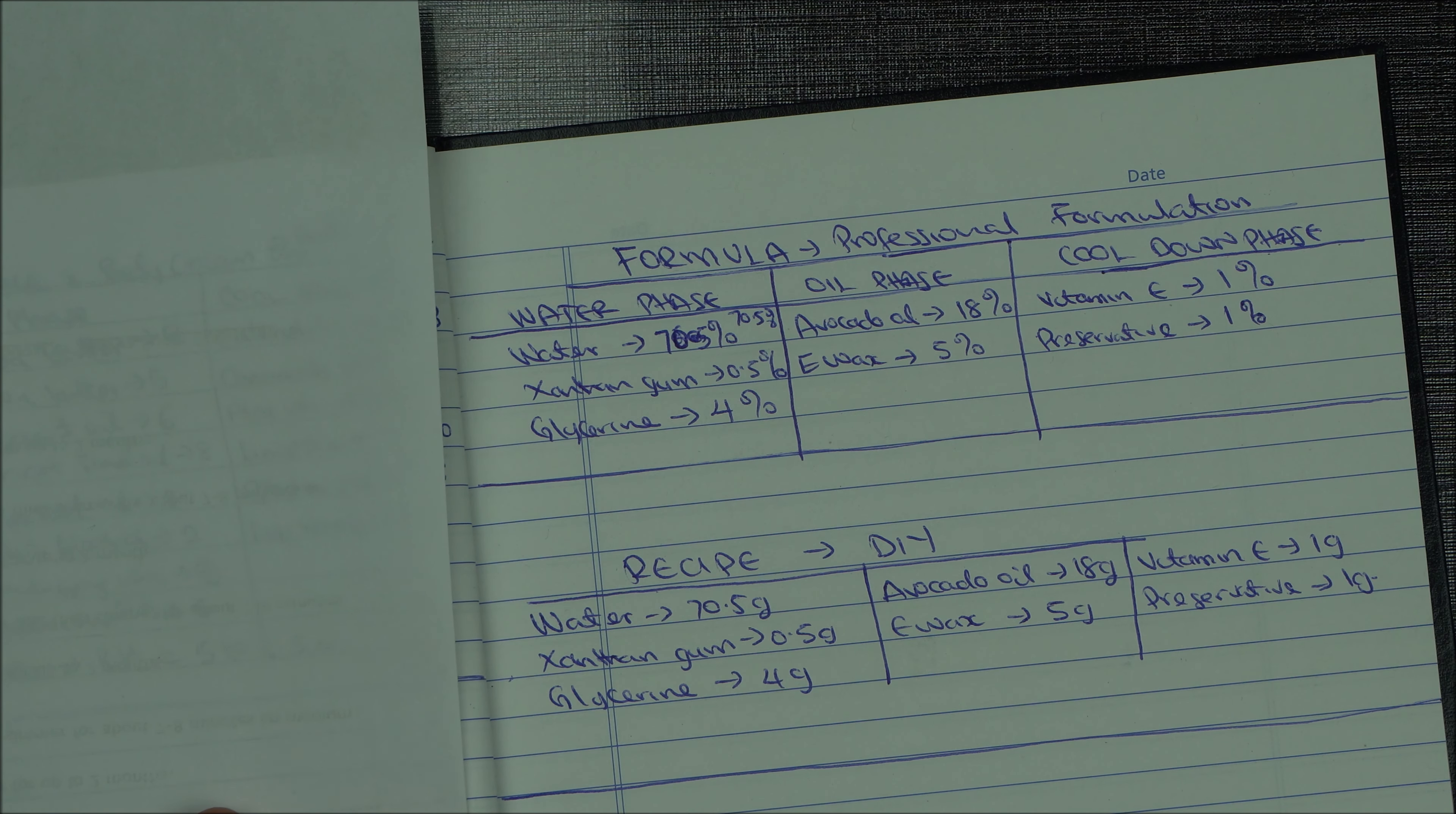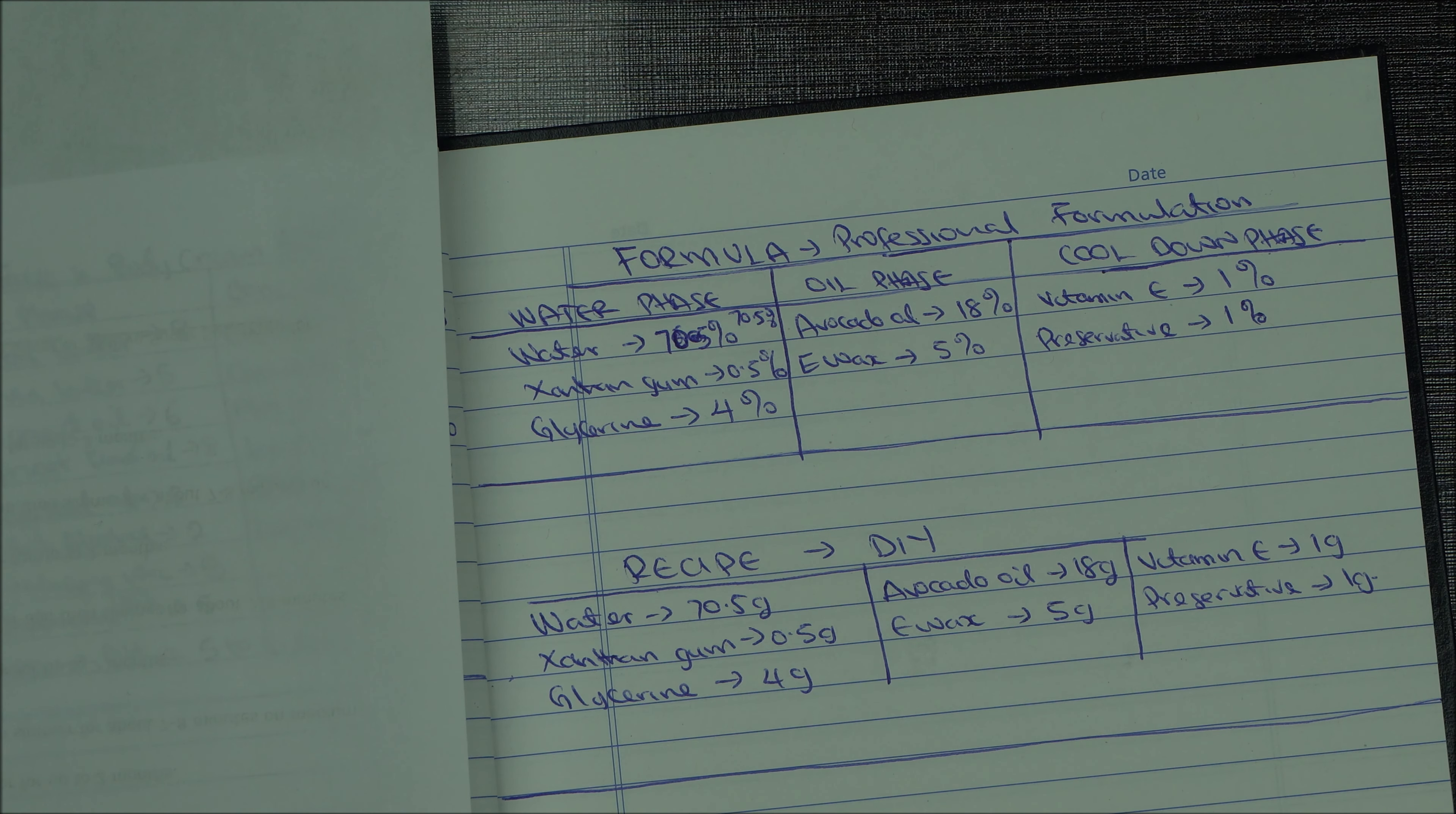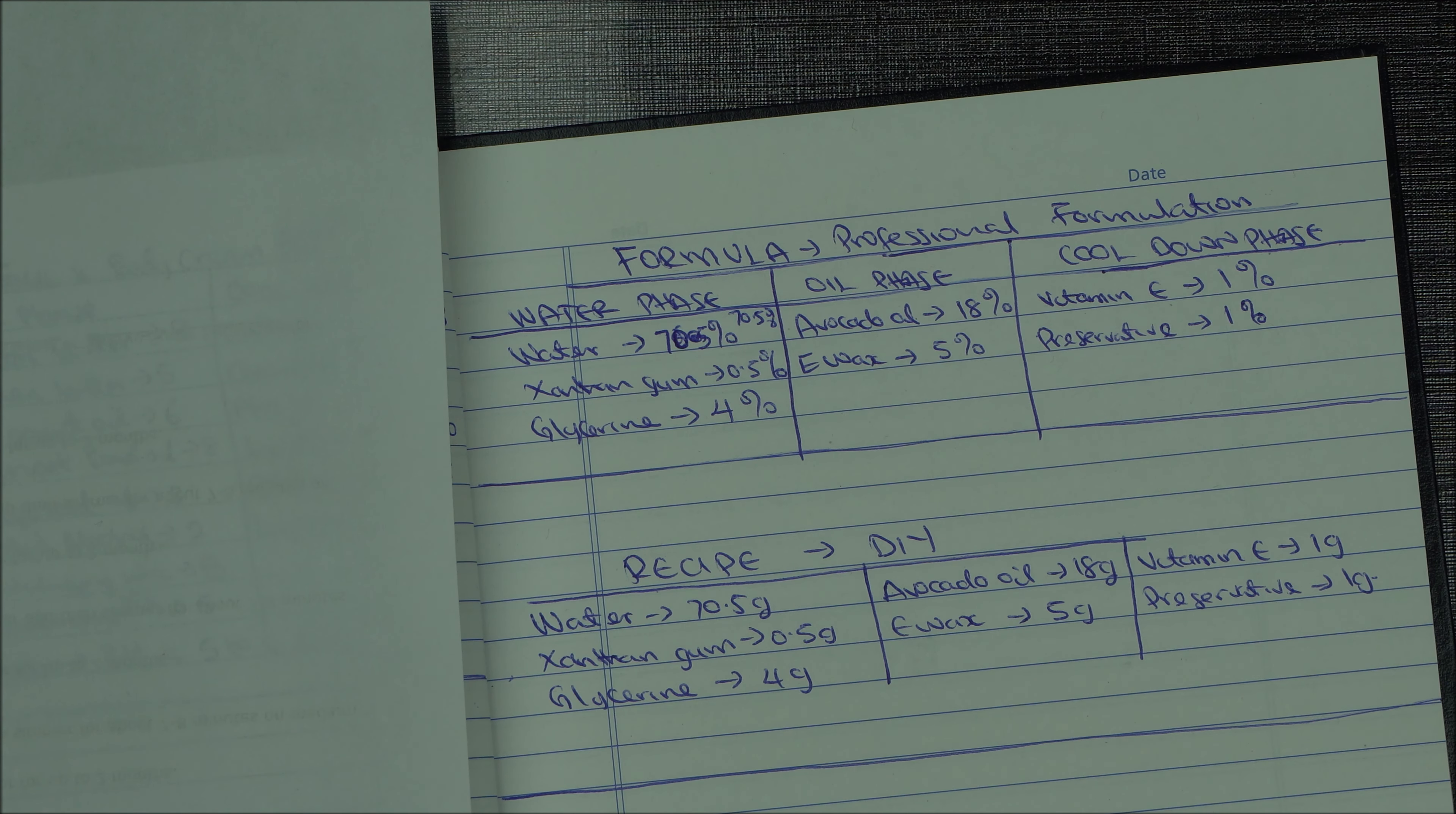Now DIY, or recipe, is very simple. Recipe is usually used by DIY people that do it yourself. Recipe involves the exact calculation. In formulas we use percentages because you want to scale up, so we just know the percentage of each ingredient in our product.